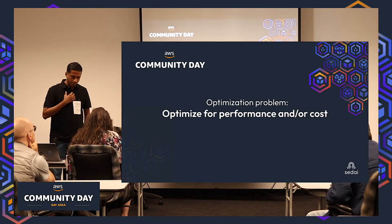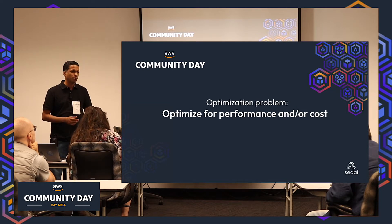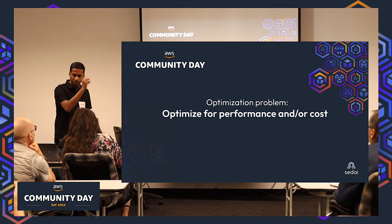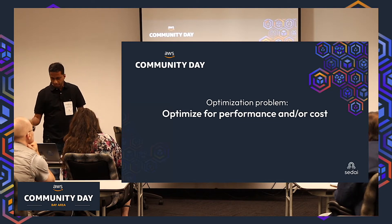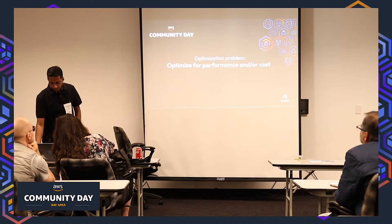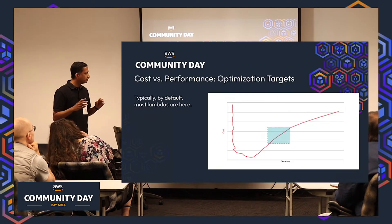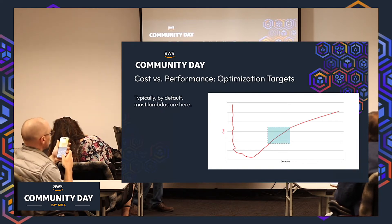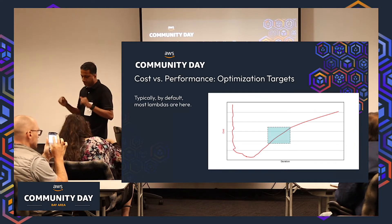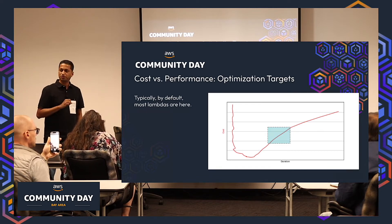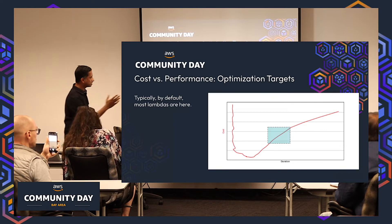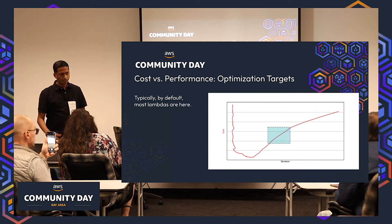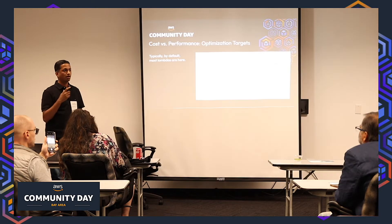What is the optimal point for your application? A batch application might be fine running for 60 seconds as long as cost is low. A real-time application needs to run in milliseconds. So what's the right balance? Typically, you start somewhere in the middle — a reasonable duration, a reasonable cost — but when the cost hits you, you want to improve. Your duration isn't the greatest, your cost isn't the greatest, and you want to explore optimization options.